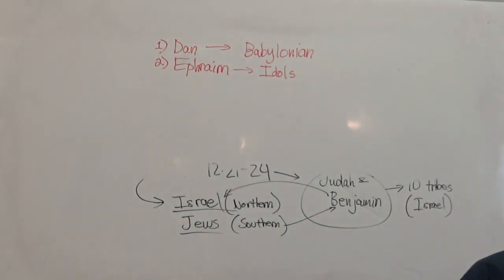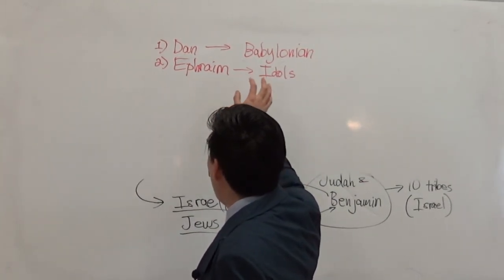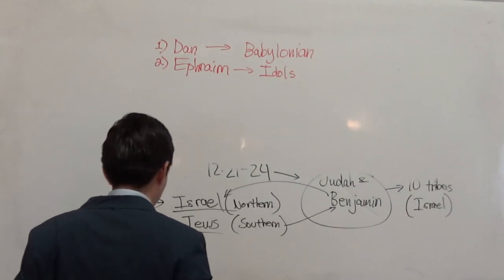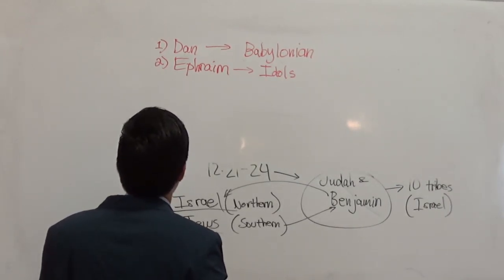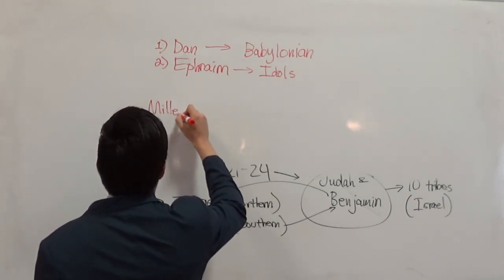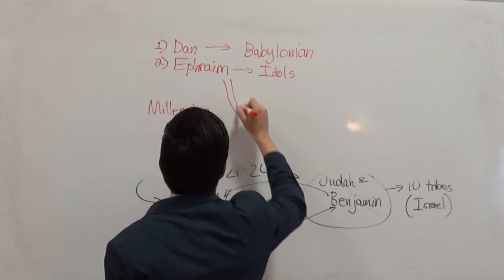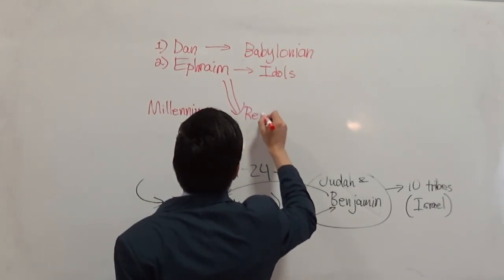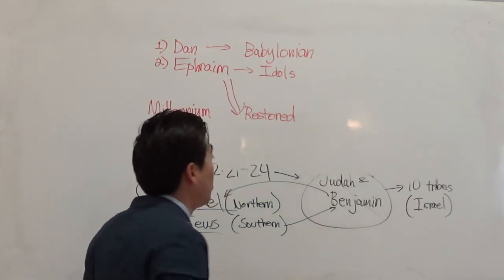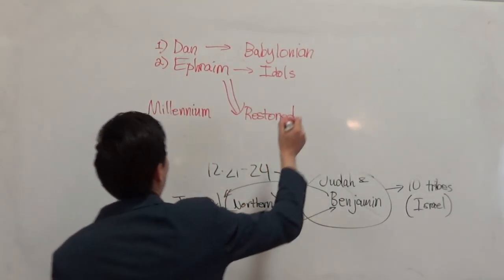In the end times, specifically the millennium, Hosea and other Old Testament passages indicate that Dan and Ephraim are restored. But during the tribulation, the Lord is not using them — they are not restored until the millennium.